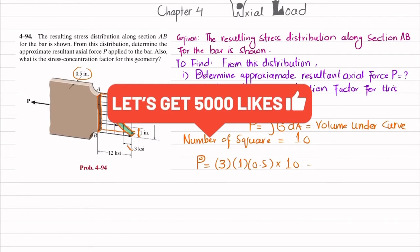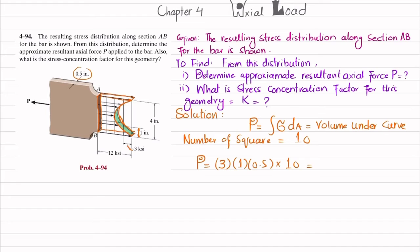So there are 10 squares. I will multiply it with 10. So it will give you the P load which is the volume under the curve. And when you calculate it, it will be equal to 15 kips. So I will write P will be equal to 15 kips, which is the answer of our first part.